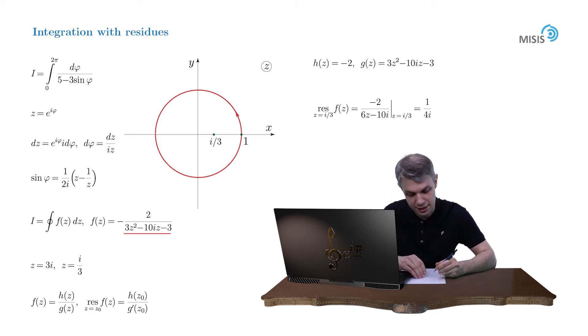As a result our integral is simply equal to 2πi times 1 over 4i, which gives π by 2. And that completes our calculation.